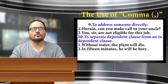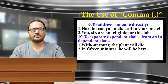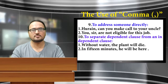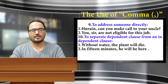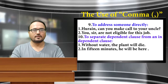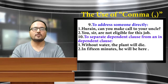The tenth use of comma: it is used to separate a dependent clause from an independent clause. Example one: Without water, the plant will die. Here 'without water' is a dependent clause, and 'the plant will die' is an independent clause. Example two: In 15 minutes, he will be here. Here 'in 15 minutes' is a dependent clause, and 'he will be here' is an independent clause.